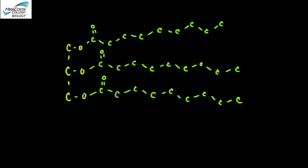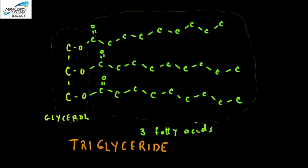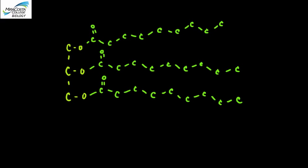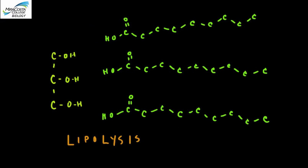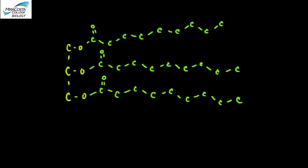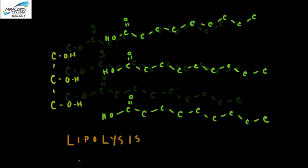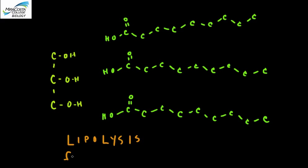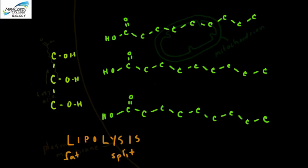When you catabolize a fat molecule, specifically a triglyceride—and remember the structure of a triglyceride is a glycerol attached to three fatty acids—the first step is lipolysis, the splitting of a fat. Here's where the triglyceride is broken into the component glycerol and fatty acids. This typically happens in digestion, and the fatty acids are then taken up by the blood.